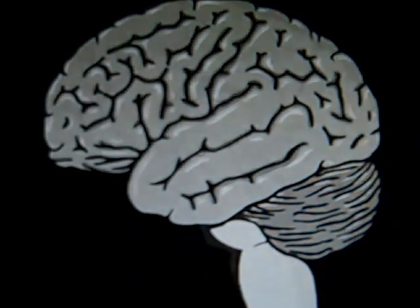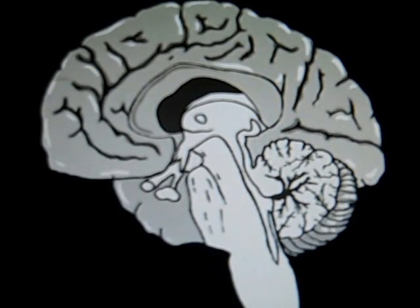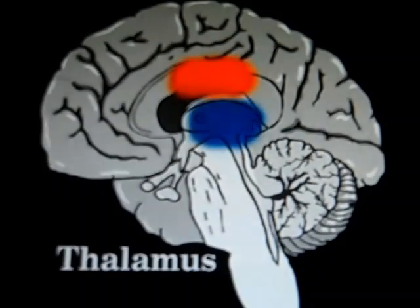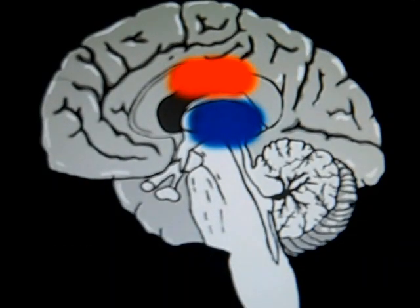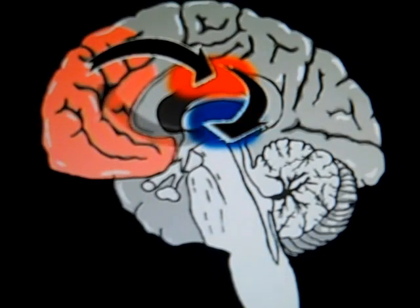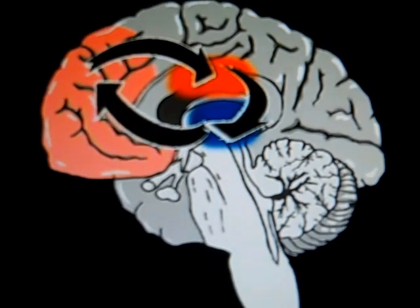The brain has some deep structures too, and buried within the brain is something called the basal ganglia, and another structure called the thalamus. There is a circuit, a pathway in the brain that goes from the front part of the brain to the basal ganglia, then from the basal ganglia to the thalamus, and from the thalamus back to the front part of the brain, the frontal cortex. It's a loop.